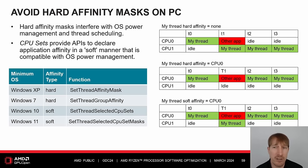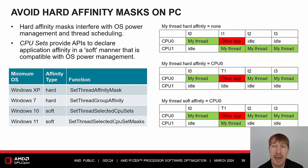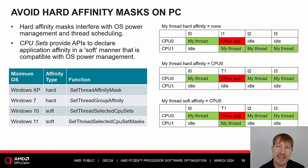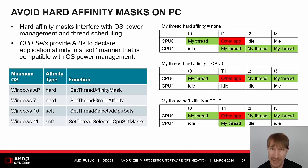APIs using hard affinity masks include the Windows XP function SetThreadAffinityMask and the Windows 7 function SetThreadGroupAffinity. However, CPU sets provide APIs to declare application affinity in a soft manner compatible with OS power management. APIs using soft affinity CPU sets include the Windows 10 function SetThreadSelectedCpuSets and the Windows 11 function SetThreadSelectedCpuSetMasks. Avoiding hard affinity masks on PC may improve performance and hours of battery life while gaming.